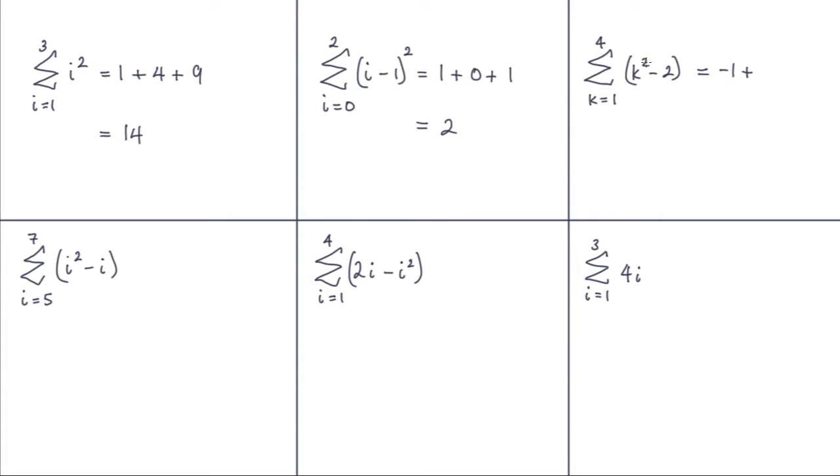Next value is 2. So 2 squared is 4. Subtract 2 is 2. Then we have to put 3 in. So 3 squared is 9. Minus 2 is 7. And finally we put 4 in, our final value. 4 squared is 16. Minus 2 is 14. 14 and 7 is 21, 23. So a total of 22.